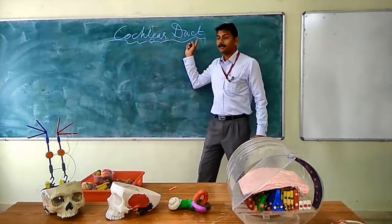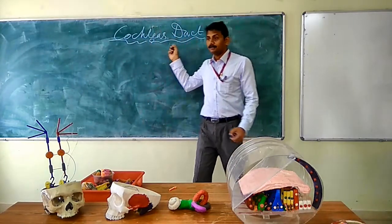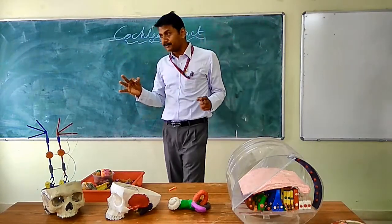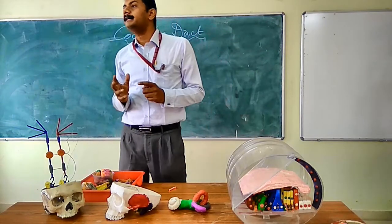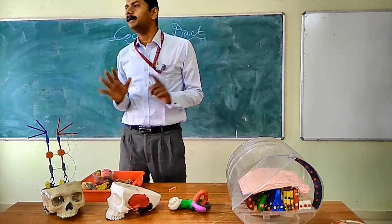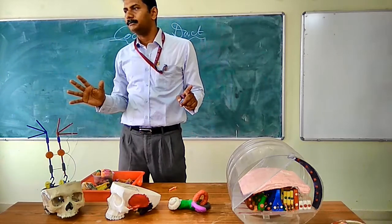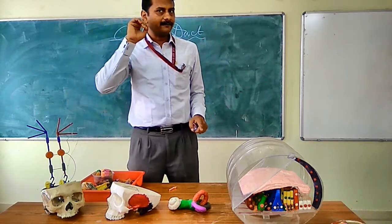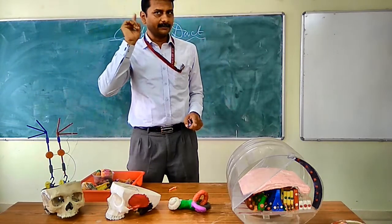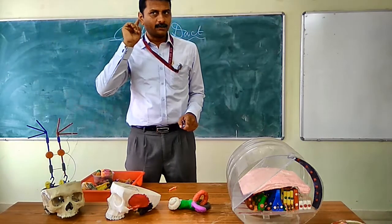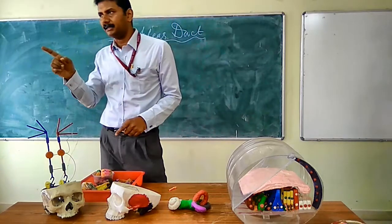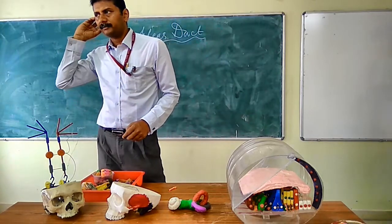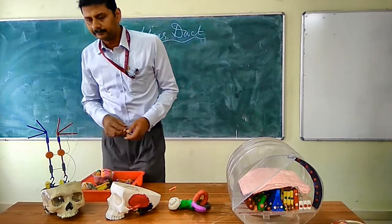The cochlea is out, so where can the cochlea come in? The cochlea is a part of the inner ear. Here we have this visible part which is known as the pinna, the part of the external ear.